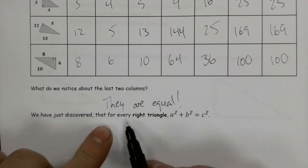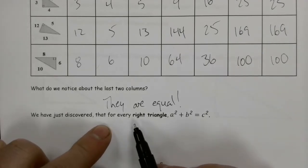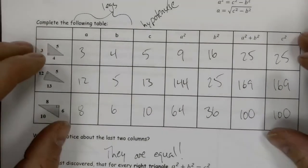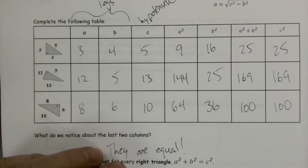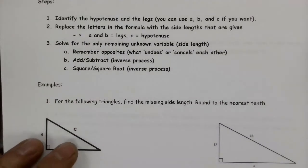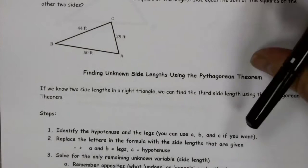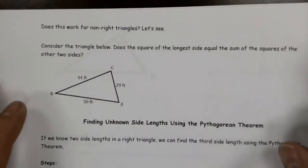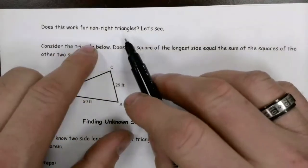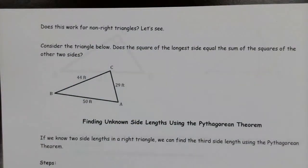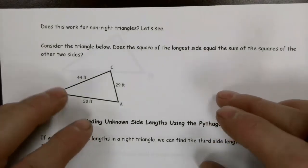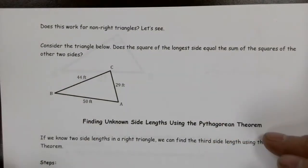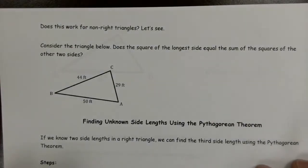This doesn't prove it works for every right angle triangle — it just shows it works for these three. But it gives you a sense that this relationship is trustworthy. Now, does it work for non-right angle triangles? It is tempting to think that squaring the two shorter sides and adding them will equal the longer side squared, but that's not true.